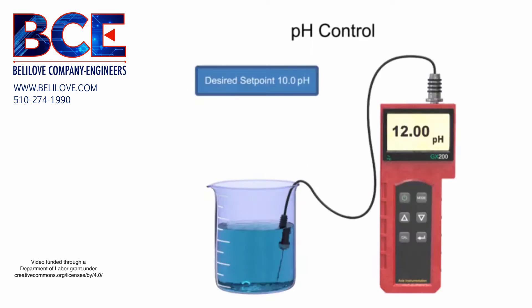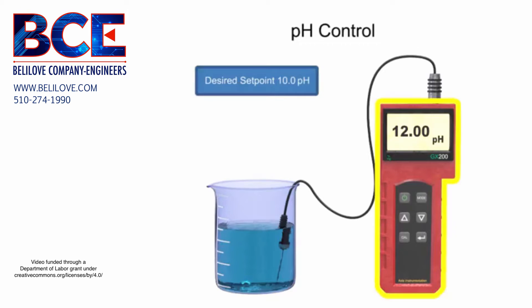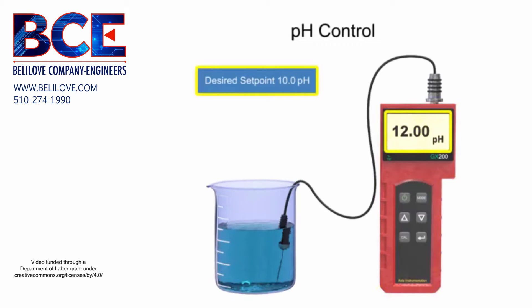To maintain the desired pH level in a solution, a sensor is used to measure the pH value. If the pH is not at the desired setpoint, a reagent is applied to the solution.